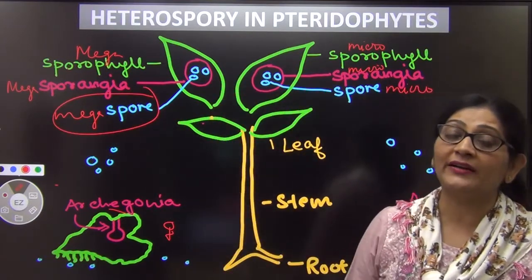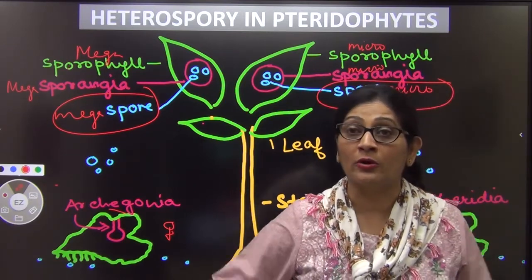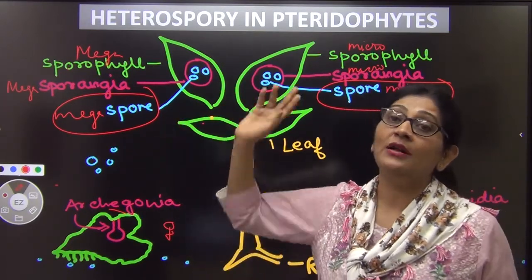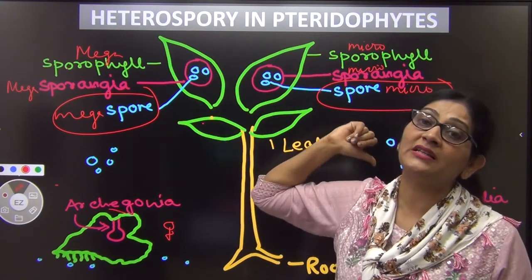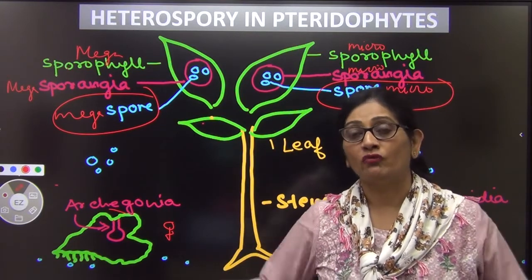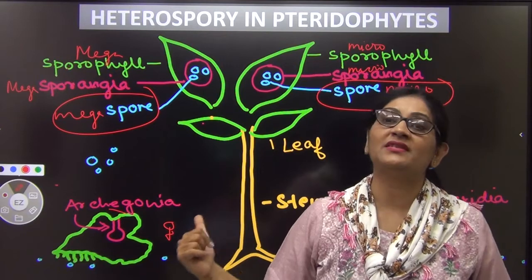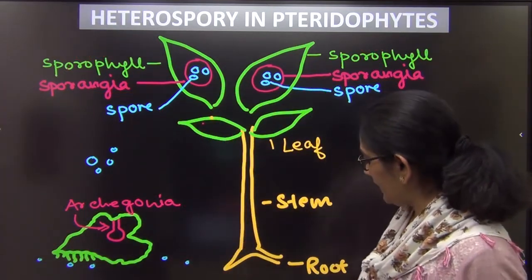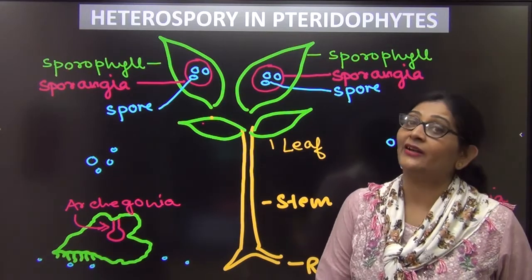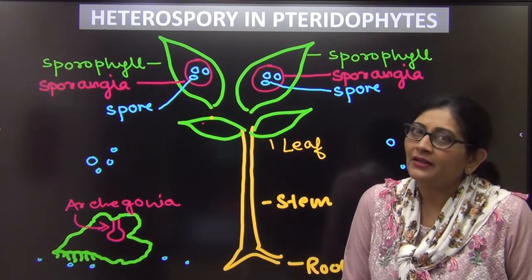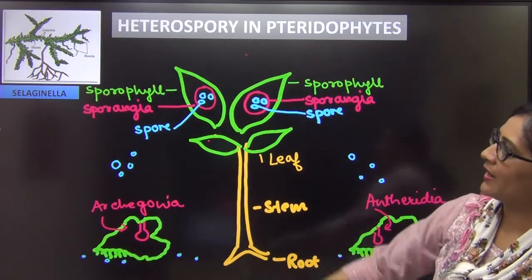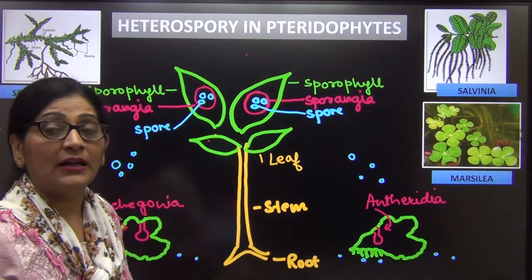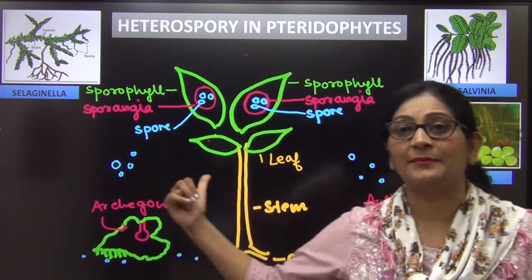One of the spores is larger in size, so we call it megaspore, and one is smaller in size, we call it microspore. Since both spores are different morphologically — one is large, one is small — and functionally — one forms the male gametophyte, the other forms the female gametophyte — we call such plants heterosporous species. Now, in some pteridophytes, let us see who they are: one is Selaginella, a pteridophyte; the second is Salvinia; the third example is Marsilia. These are some pteridophytes which actually exhibit heterospory.